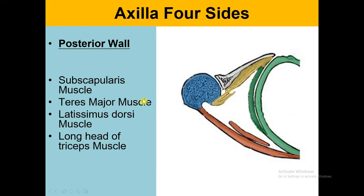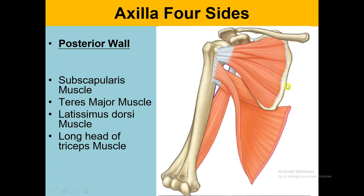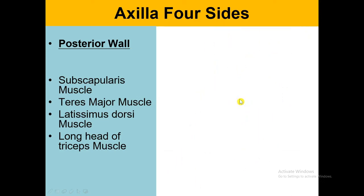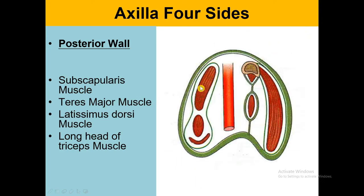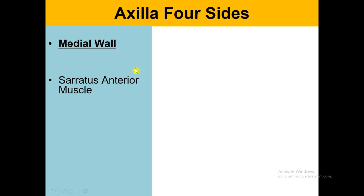The posterior wall has four muscles. In another view, the four muscles are: subscapularis, teres major, latissimus dorsi, and the long head of the tricep. These four muscles make up the posterior wall of the axilla. Here we have subscapularis, teres major, latissimus dorsi — the long head of the tricep is not mentioned in this diagram.